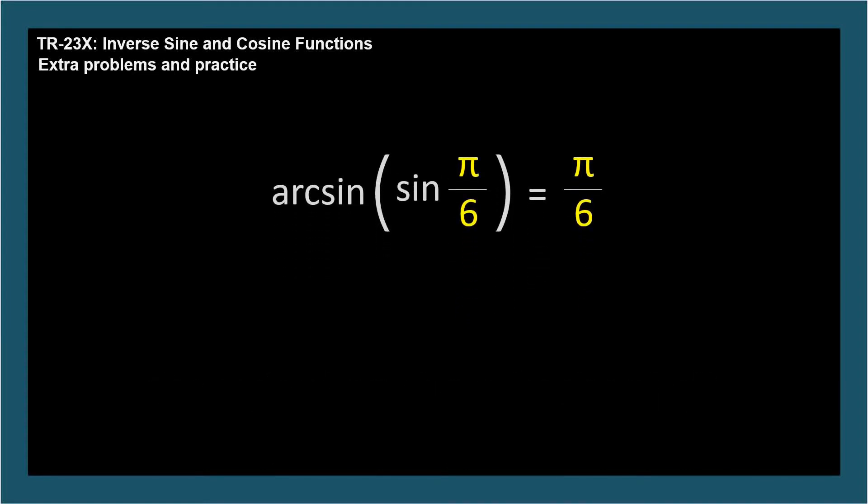So in general, you might expect the angle whose sine is the sine of x to always be x. But this isn't always the case with inverse trig functions, and that's where the tricky part arises.